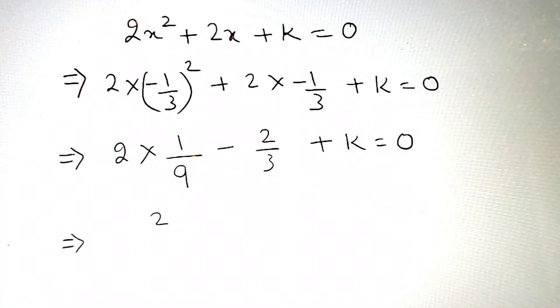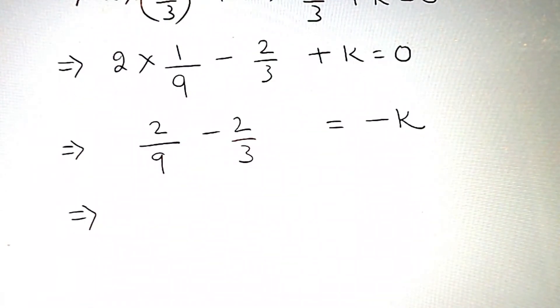So 2 by 9 minus 2 by 3 plus k equals minus k. Ab dono ka LCM lenge, 9 and 3 ka LCM 9 hua. 9 ko 9 se divide karenge is 1, 1 into 2 is 2, minus 3 ko 9 se divide karenge is 3, 3 into 6 equals minus k.